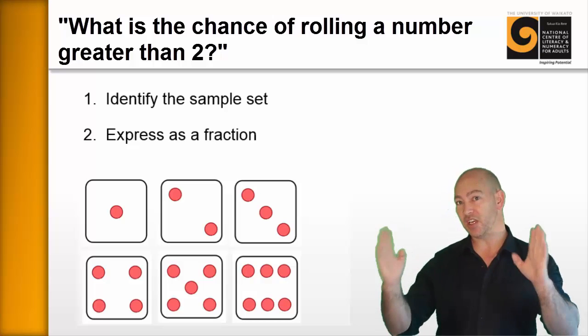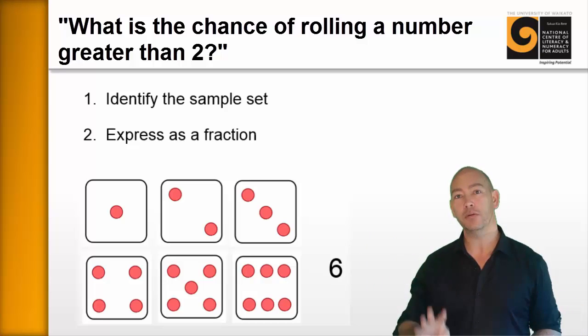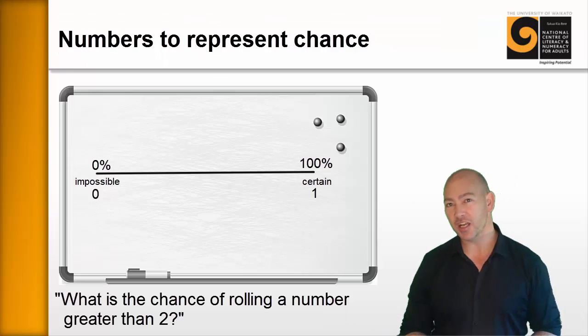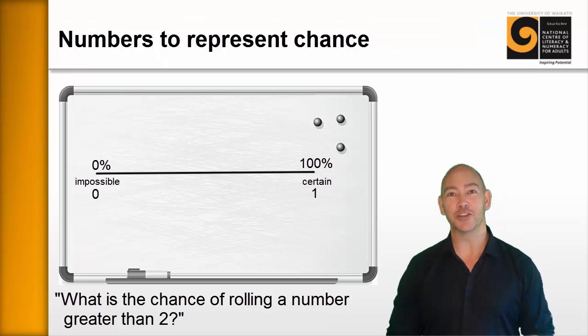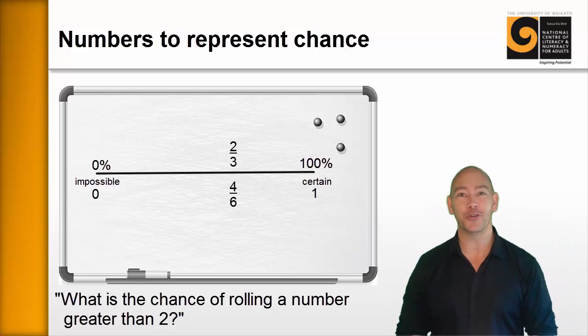Well, we know there are six possible options. How many of them are above 2? Four of them are above 2. So that's 4 over 6. The chances of rolling the dice and getting a number that's larger than 2 is 4 out of 6, which is 2 out of 3, 2 thirds. And then write that on the continuum as well.